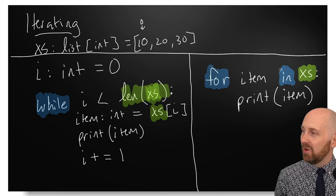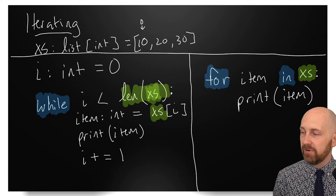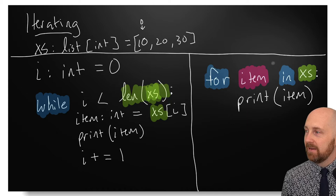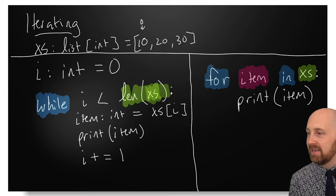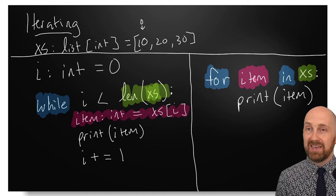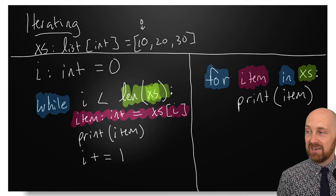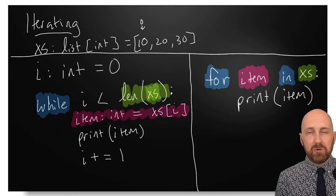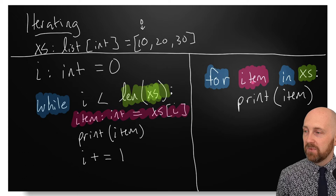The item variable in the for-in is doing exactly what this line does in the while loop. It's just the name of a variable — we could have named it x instead. We're effectively saying: the name I want to associate with each item as we iterate is item. If we had a list of strings named words, we might say for word in words — and this causes item to be updated to the next value in the list automatically.